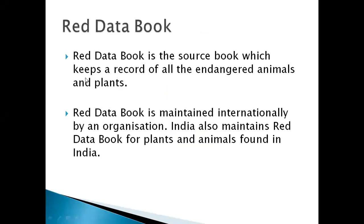My first slide is Red Data Book. What is Red Data Book? Red Data Book is the source book which keeps a record of all the endangered animals and plants. RDB यानि की Red Data Book वो source है, वो book है जिसमें सारा record रखा जाता है कि जो भी animals या plants खतरे में हैं, मतलब जिनकी संख्या इतनी कम हो चुकी है कि वो disappear हो सकते हैं।